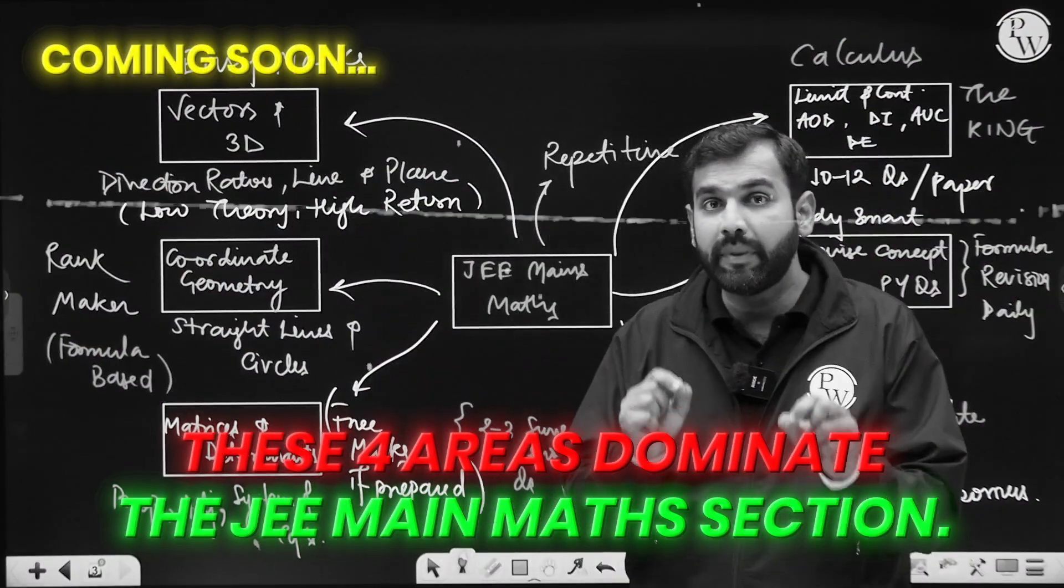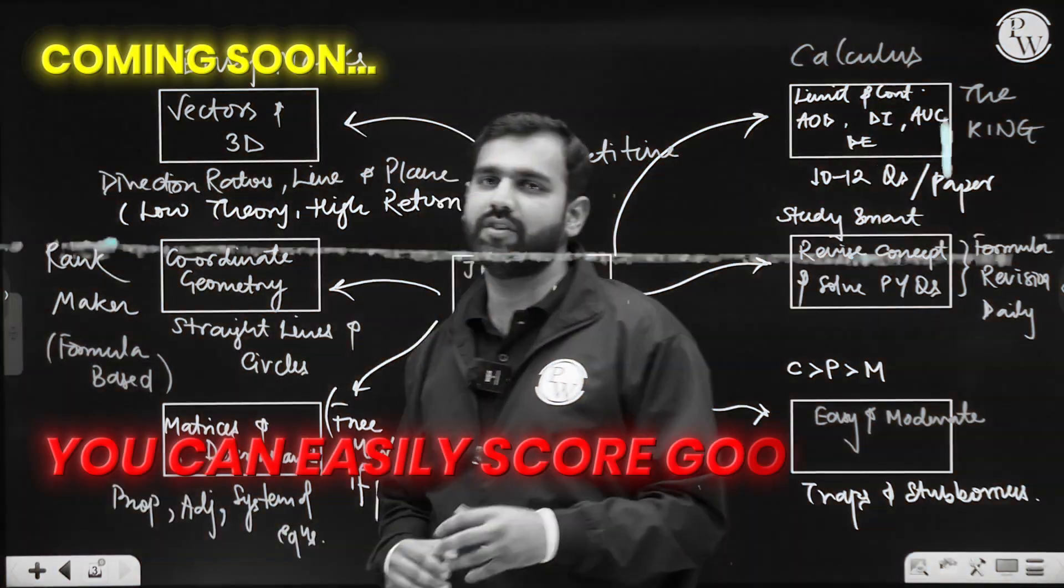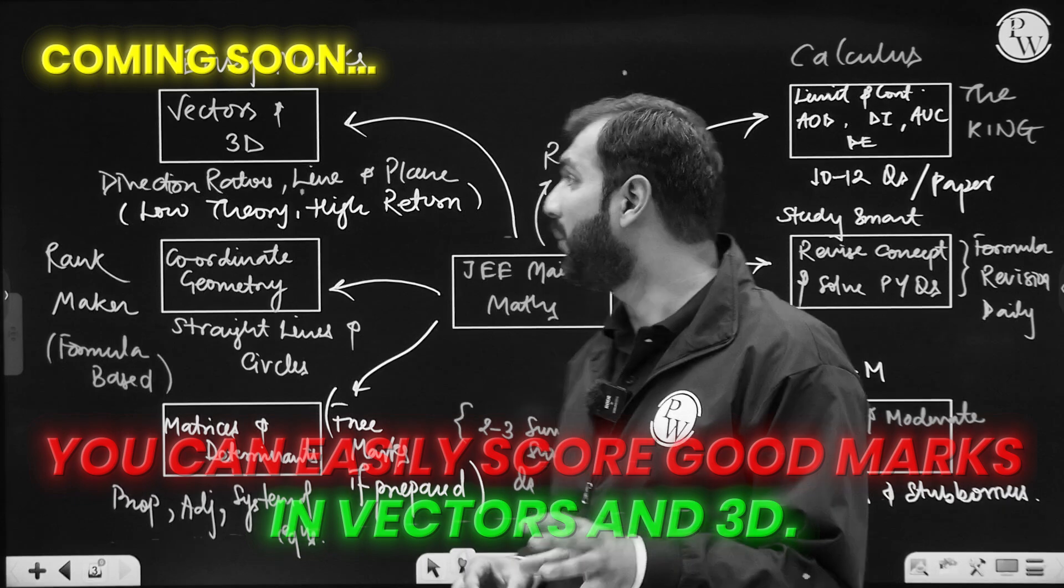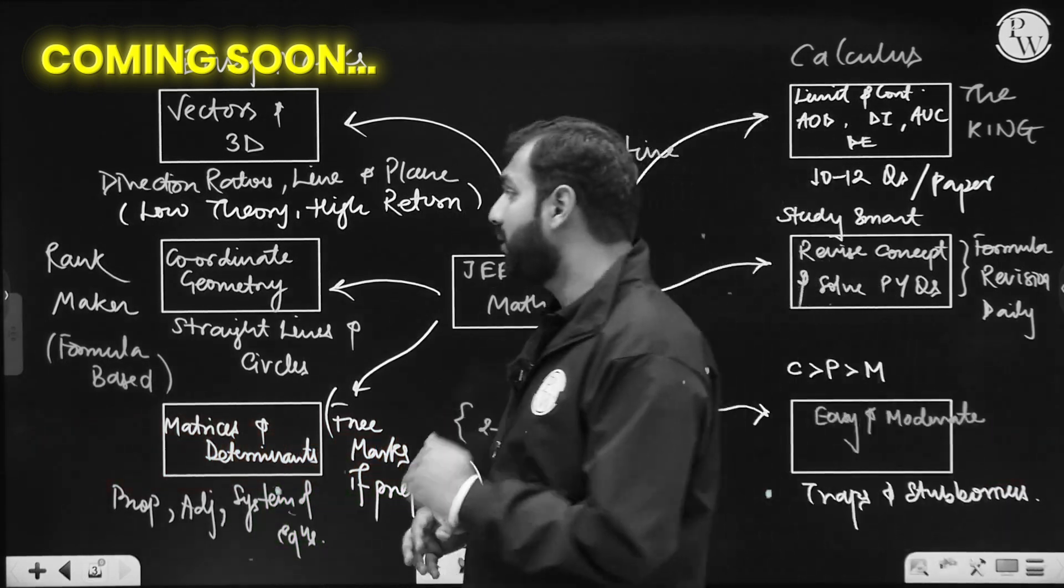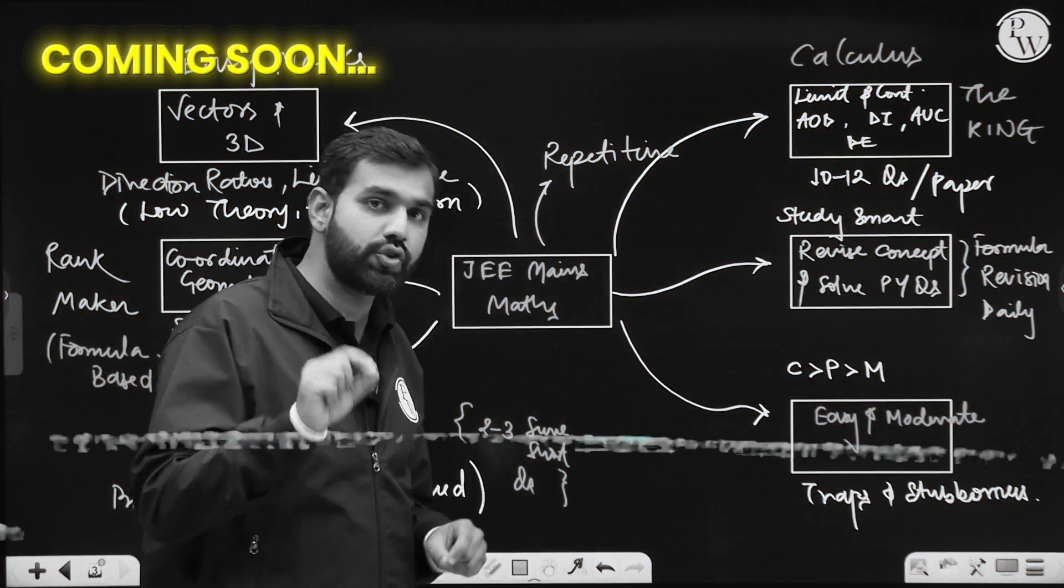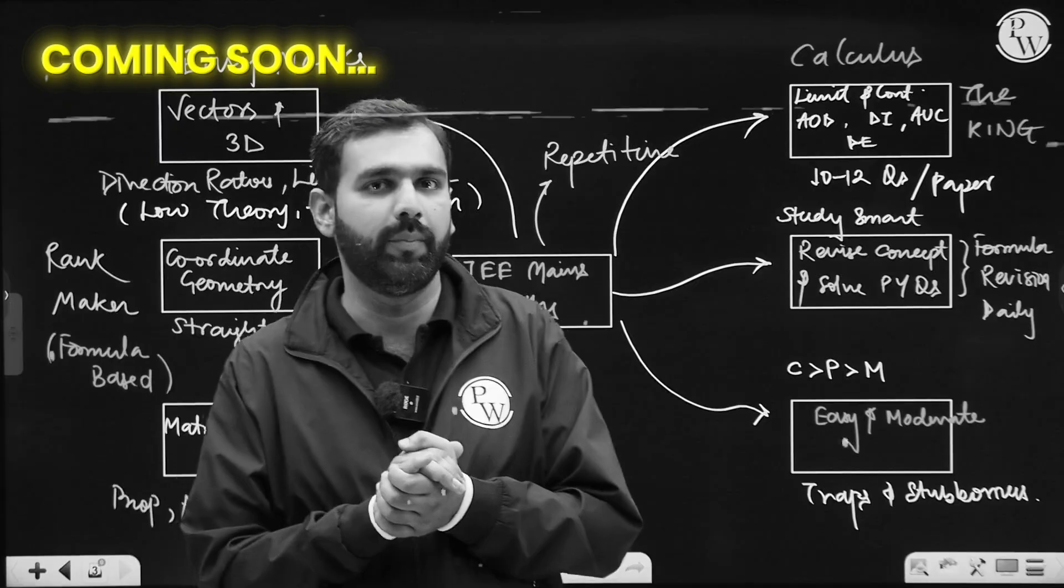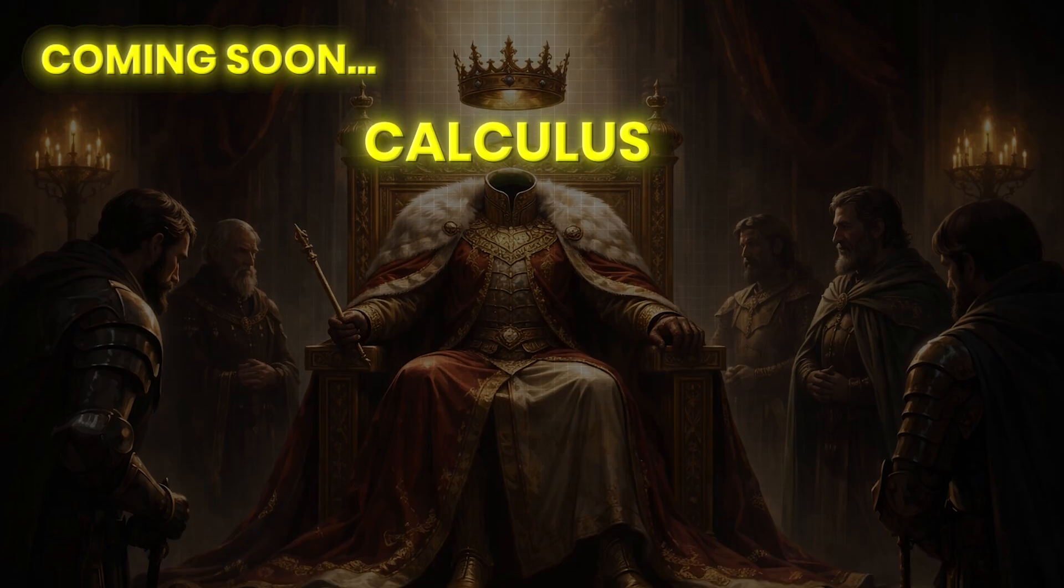Look at these four areas, they dominate JEE Main's math section. Vectors in 3D, there you get easy marks. So yes, they are the rank makers. Two to three questions, short questions are asked from matrices and determinants. The king of maths is calculus, of course.